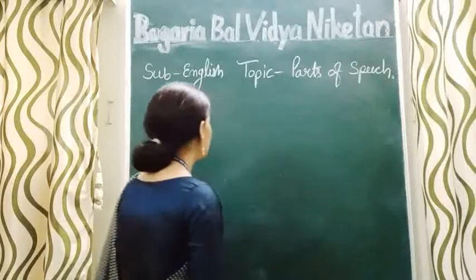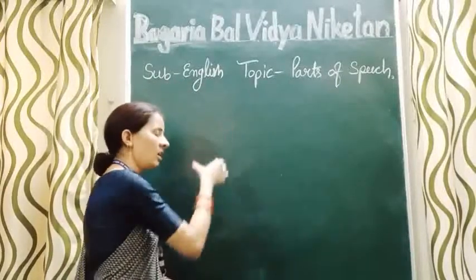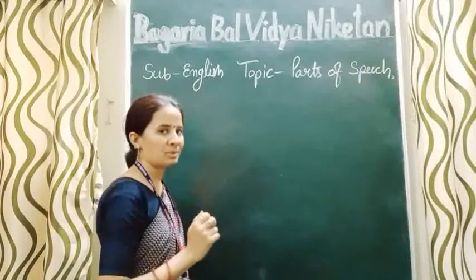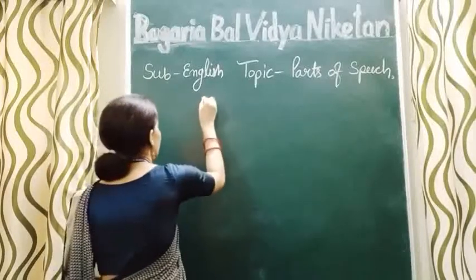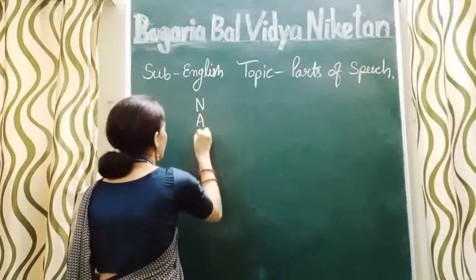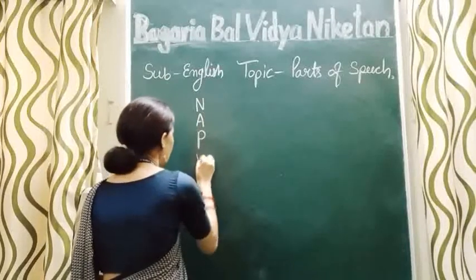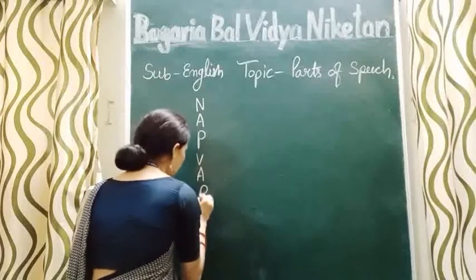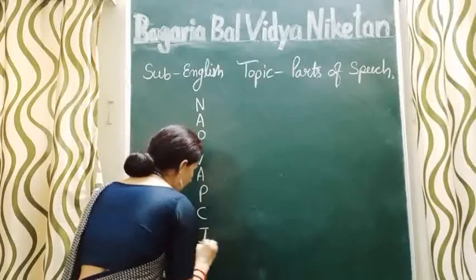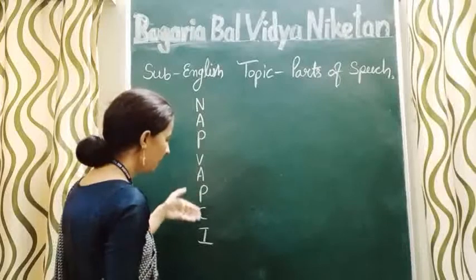Now I am going to tell you an easy formula for learning all the eight names of parts of speech sequence wise: N, A, P, V, A, P, C, I — NAP, VAPC, I.